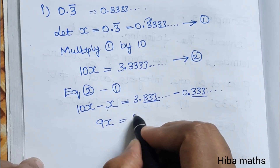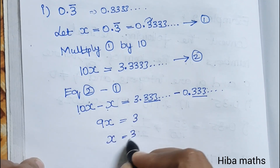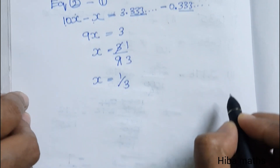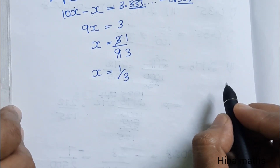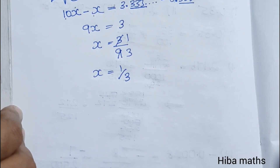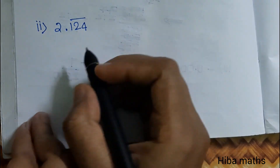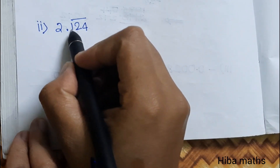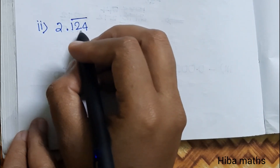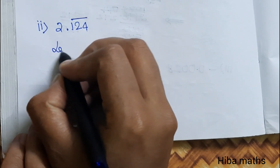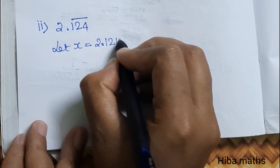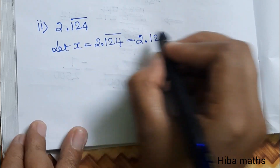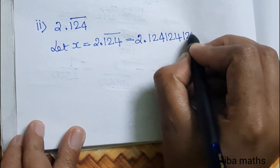Therefore x equals 3 by 9, which simplifies to 1 by 3. Now for the next question, the decimal is 0.2124 repeating, with the repeating block being 1, 2, 4.